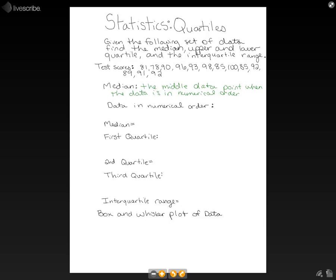In order to find our median, we need to rewrite our test scores in numerical order. So when we do that, we'll have 78, 81, 85, 85, 89, 90, 91, 92, 92, 93, 96, 98, and 100.